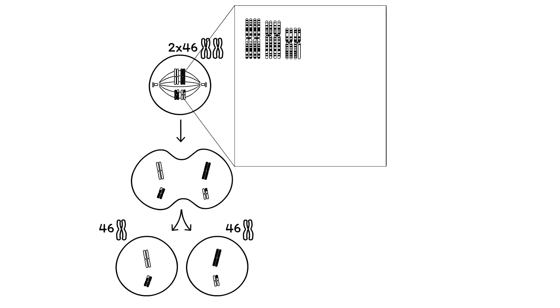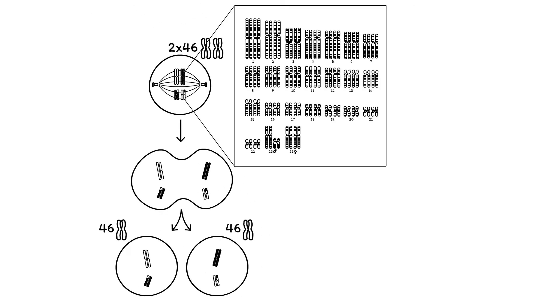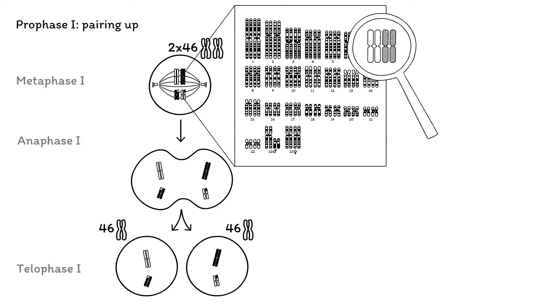To ensure that each haploid cell contains all 23 chromosomes, homologous chromosomes are paired up before they are split. Parts of the homologous chromosomes may cross over, leading to the exchange of chromosomal regions. This is called homologous recombination. The chromosome pairs are subsequently disjoined, such that each daughter cell randomly contains one of the two homologous chromosomes.